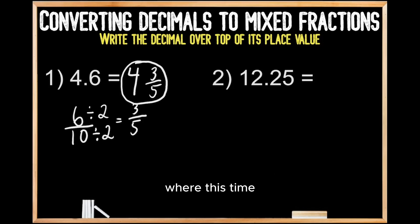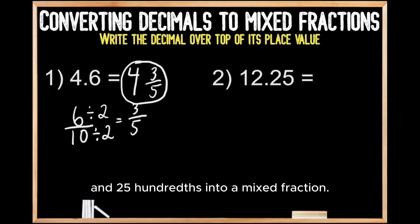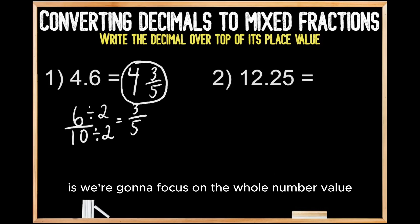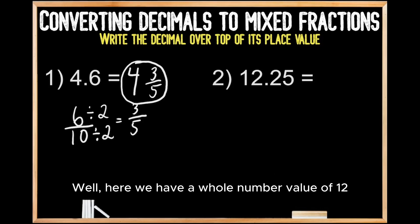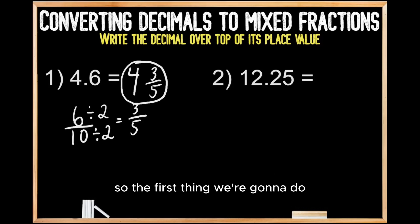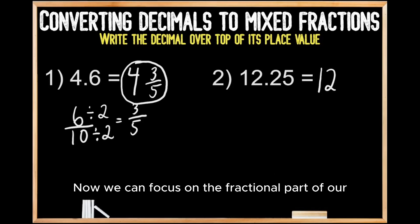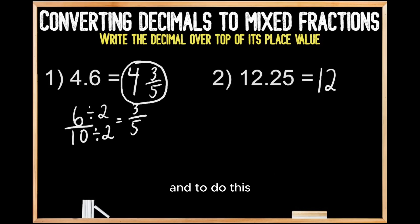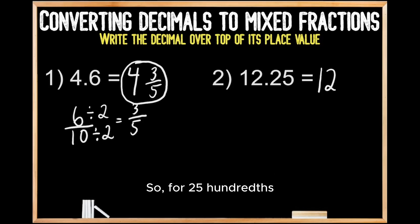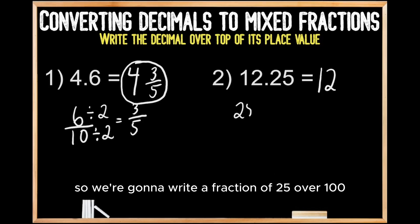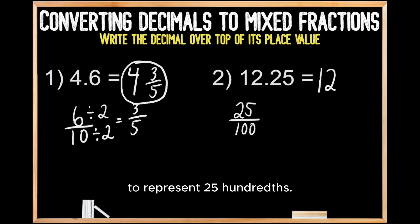Moving on to question number 2, where we're being asked to convert the decimal of 12 and 25 hundredths into a mixed fraction. Just like the first problem, we'll start with the whole number value. Here we have a whole number of 12, so we write 12 in our answer since the value of our whole number is not going to change. Now we focus on the fractional part: we write the decimal over top of its place value. For 25 hundredths, we're in the hundredths place, so we write the fraction 25 over 100 to represent 25 hundredths.